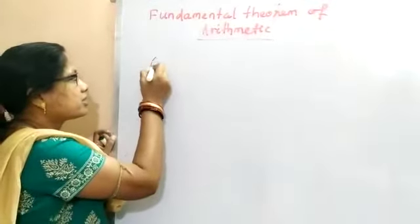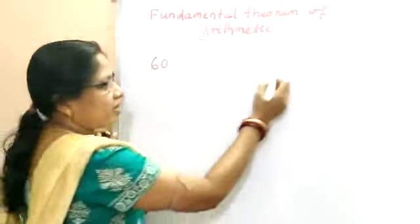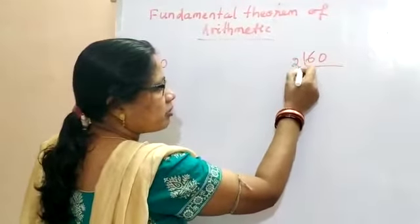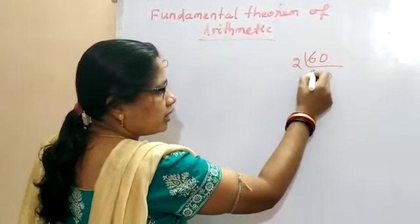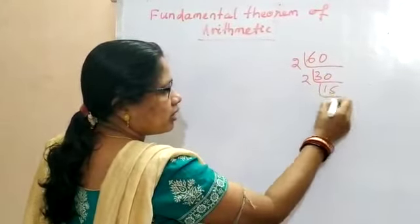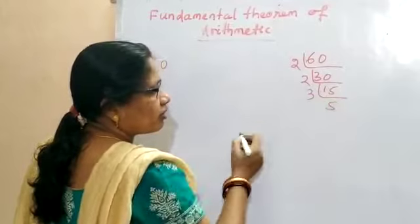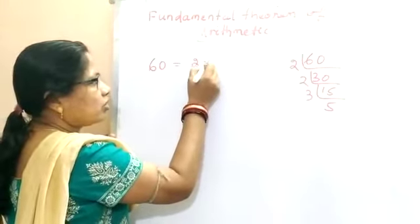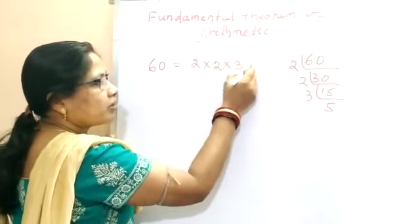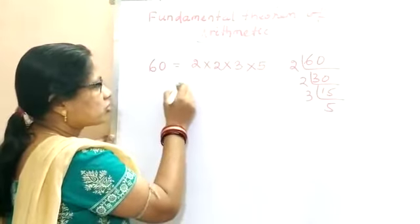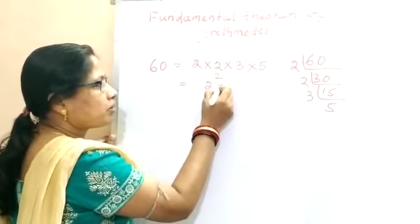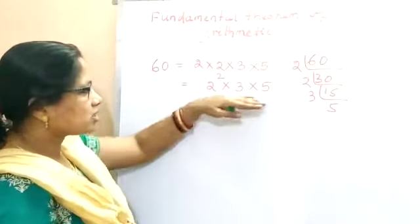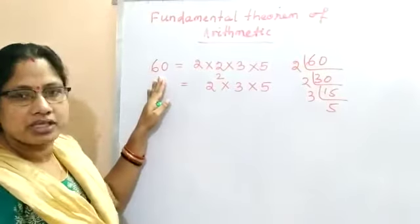For example, take 60. We can factorize 60 — it is divisible by 2, then by 2 again, then 3, then 5. So 60 can be written as 2 × 2 × 3 × 5, which equals 2² × 3 × 5. This is the prime factorization of 60.